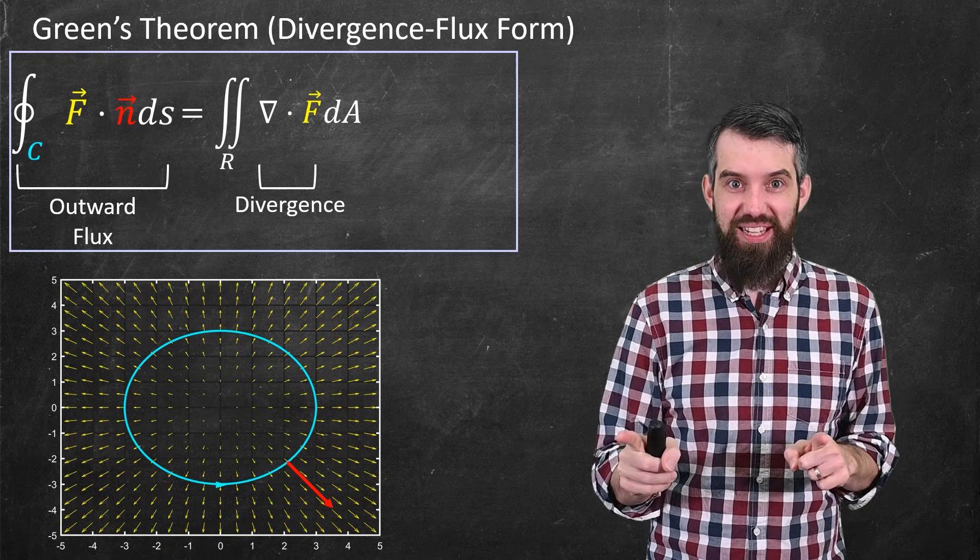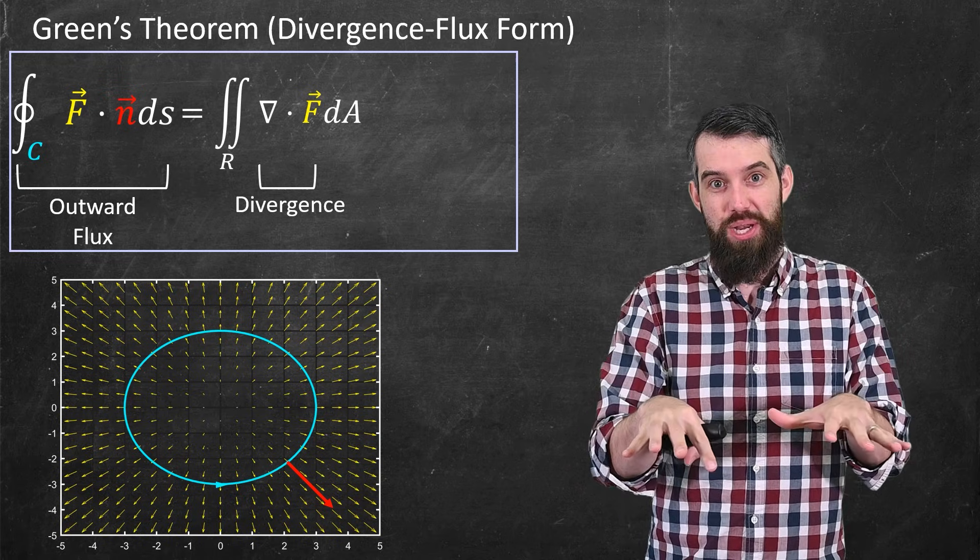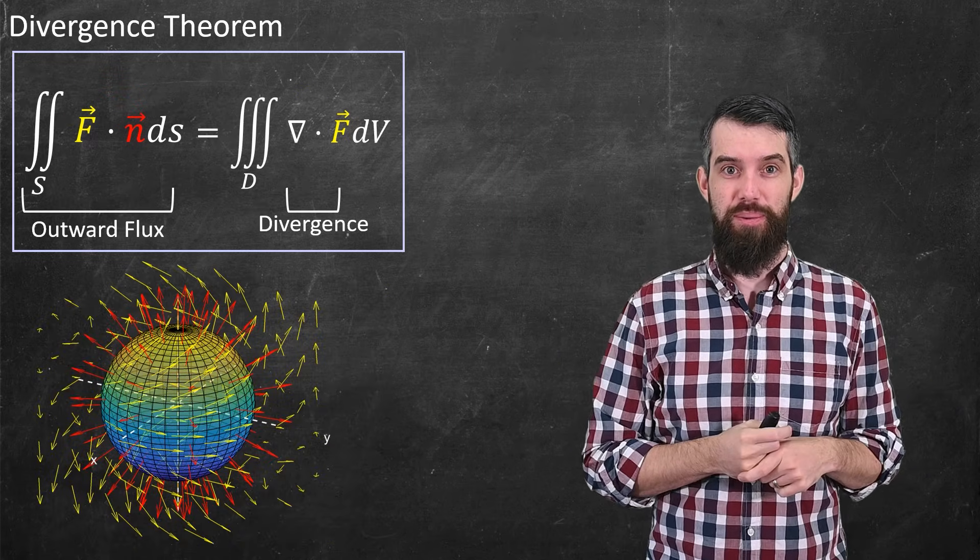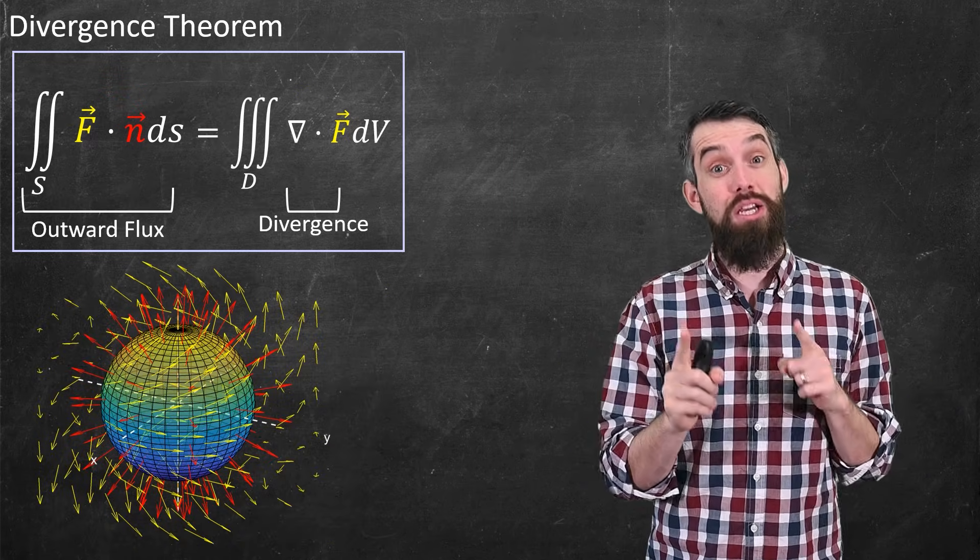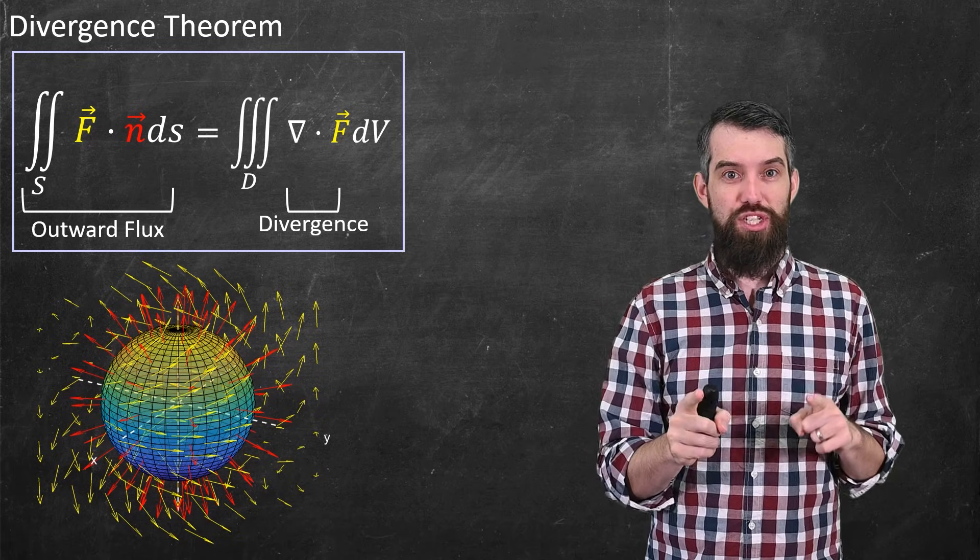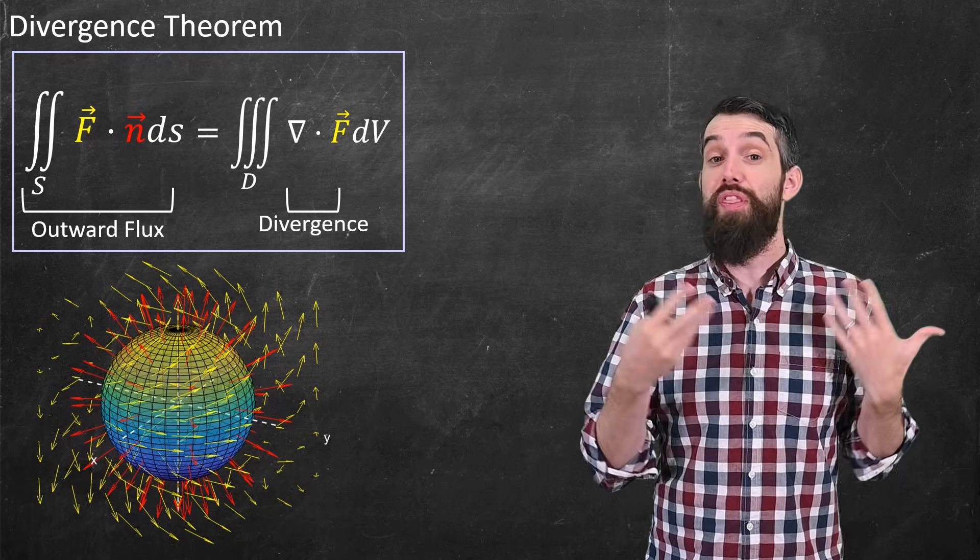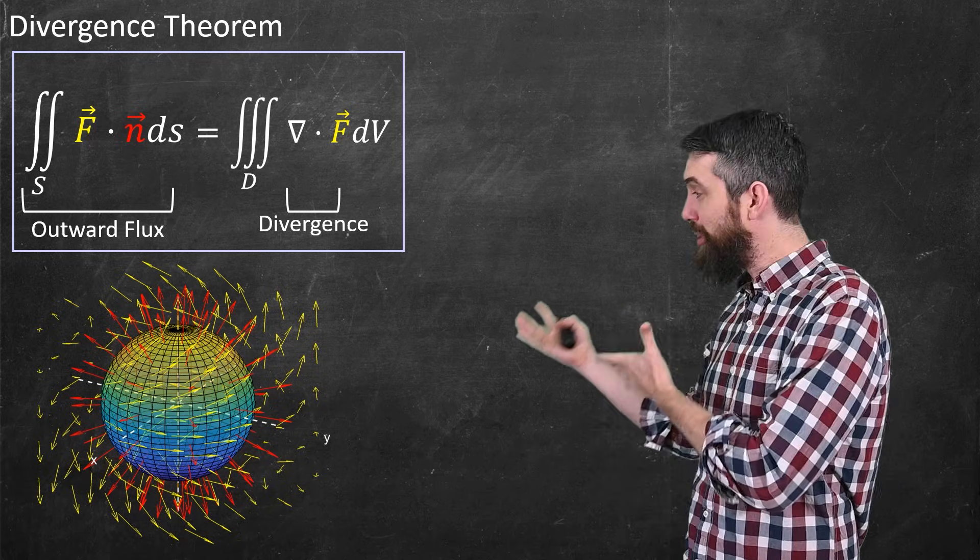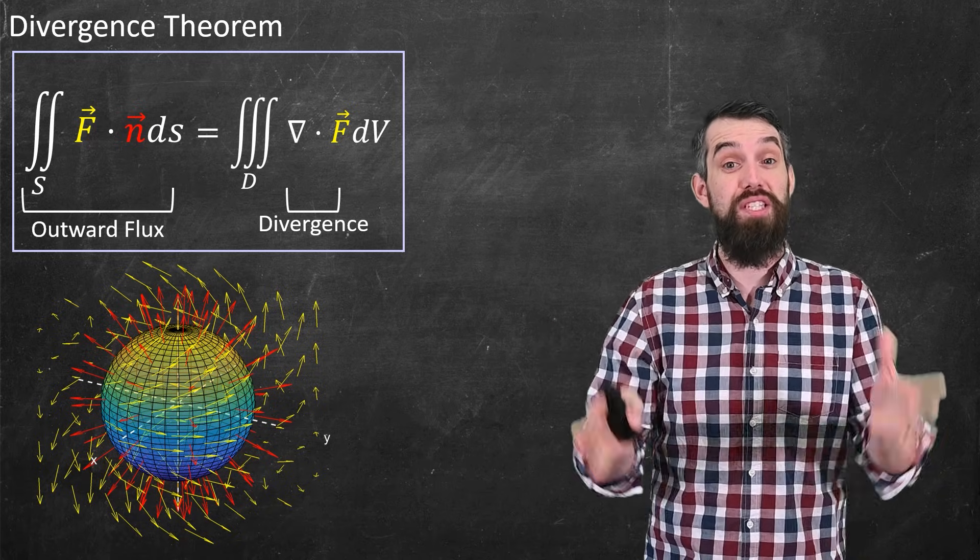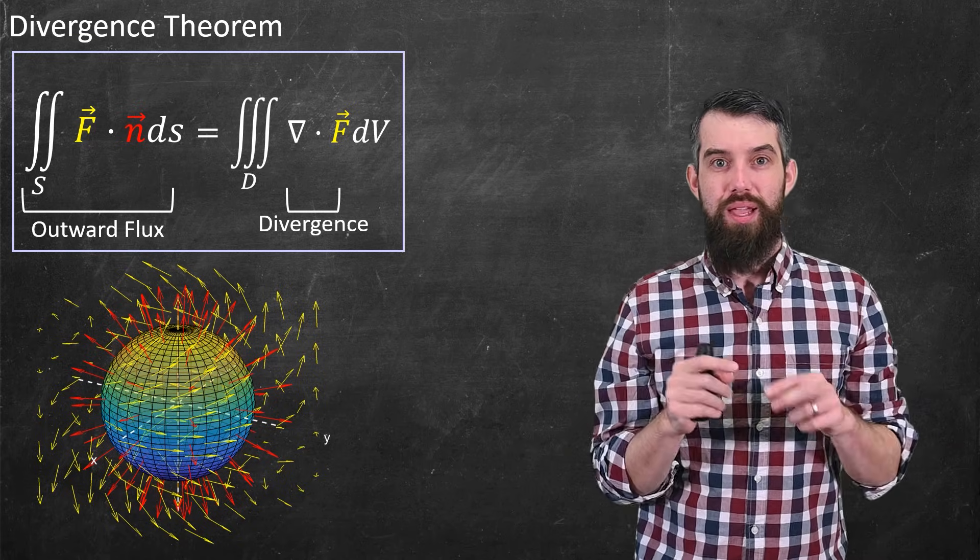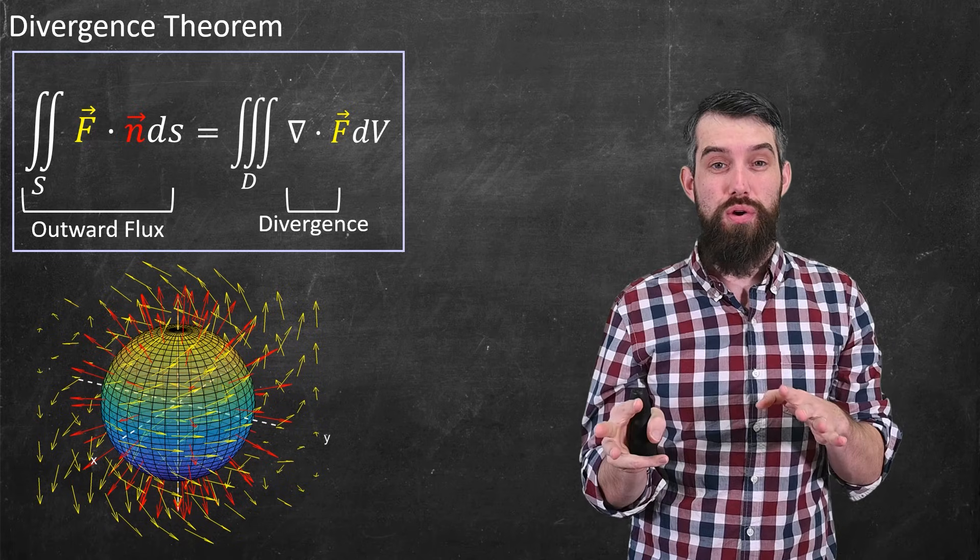Now it's time finally to upgrade from the two-dimensional situation where Green's theorem applies to the three-dimensional situation of the divergence theorem. So what's going on? Let's look at the picture first. In the picture, I have in yellow just a vector field. Living within that vector field is a surface, and I've plotted the surface of a sphere as my example of a closed surface. And then I've also plotted a lot of red vectors. What are those?